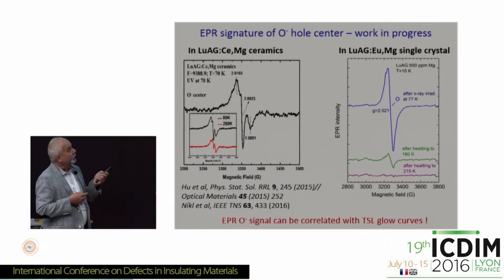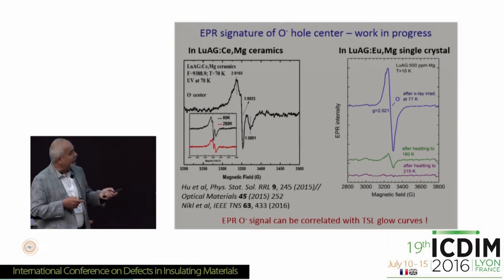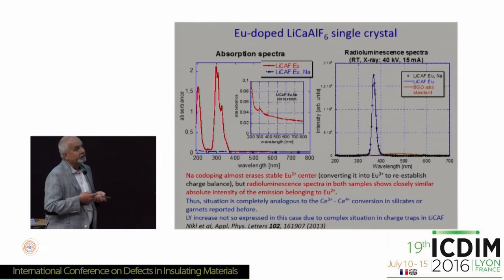What is a good message is that in all these materials we can clearly see by EPR the O-minus center, because codoping with a divalent ion will also induce some O-minus centers for charge equilibration. We see them well both in ceramics and single crystals. This opens a way — and this is work in progress — to correlate the EPR O-minus signal with TSL, exactly as we did some time ago in lead tungstate and similar materials.